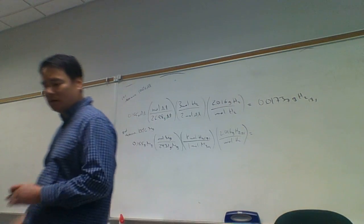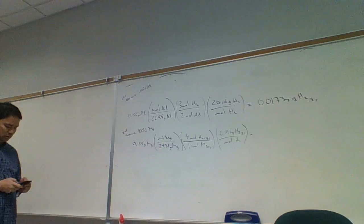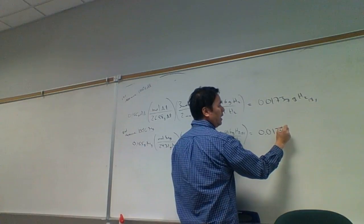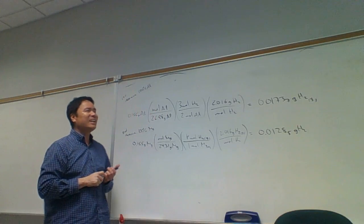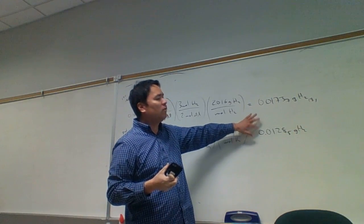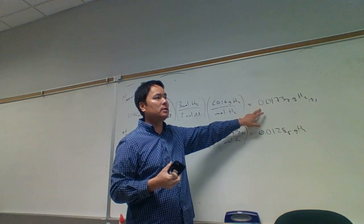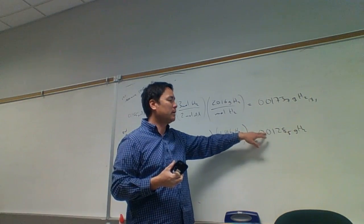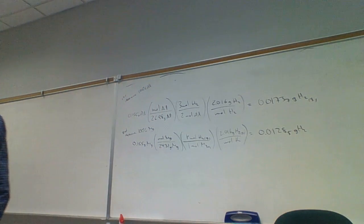That gives us grams of hydrogen. The result is 0.01285 grams. So this sample cannot be pure magnesium either. It looks like it has much more aluminum because the amount of hydrogen I get is much closer to that of pure aluminum than pure magnesium. My guess is it's much more aluminum.